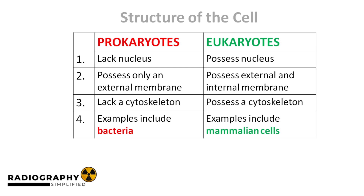Another way to classify cells is by whether or not they possess a nucleus. Prokaryotes are less complicated cells, such as bacteria cells. Eukaryotes, on the other hand, are more sophisticated cells, such as cells of the human body. The first key difference is that prokaryotes do not have a nucleus, while eukaryotes possess a nucleus. The nucleus houses the genetic material called DNA. Prokaryotic cells like bacteria don't have a nucleus, so their genetic material floats around within the cell's cytoplasm. In addition, prokaryotic cells also lack an internal membrane — all they have is an external membrane.